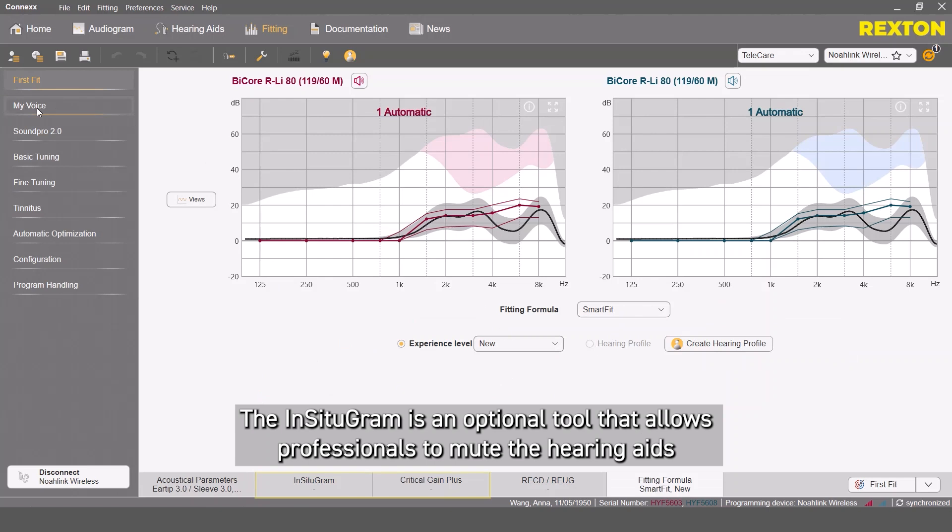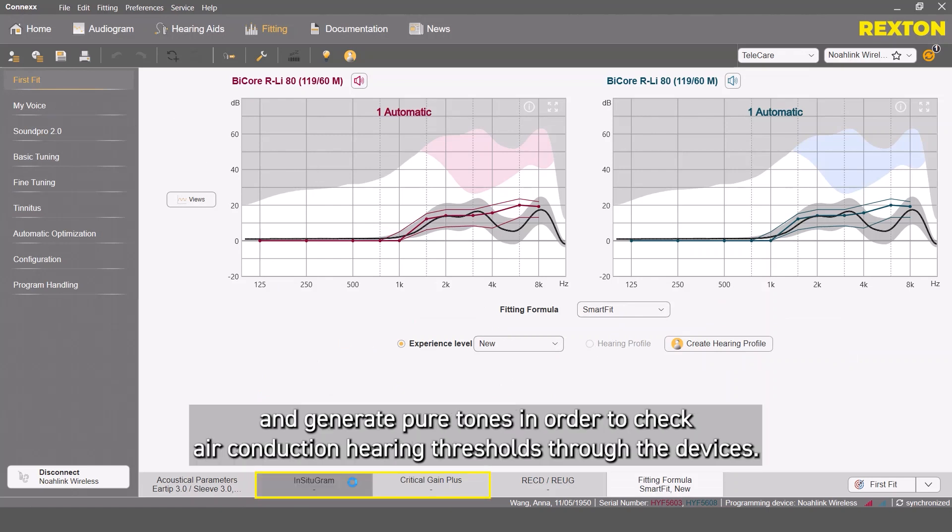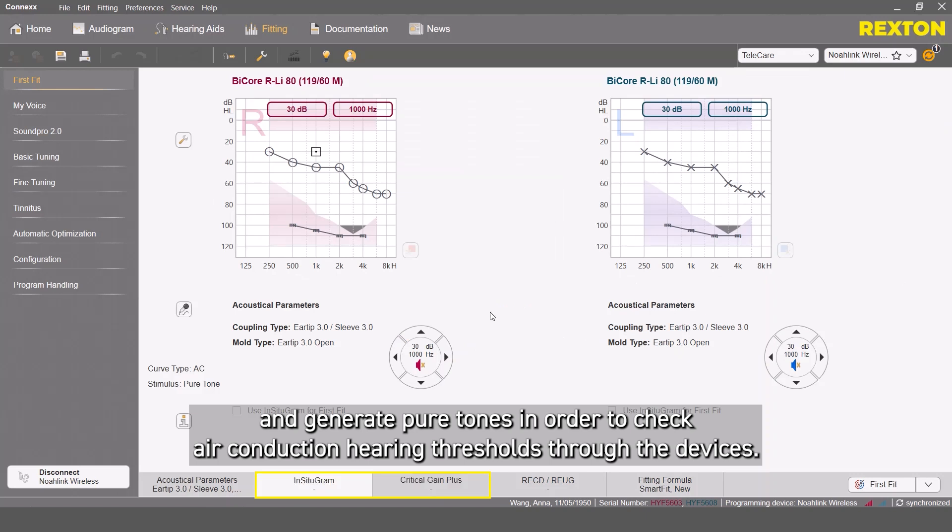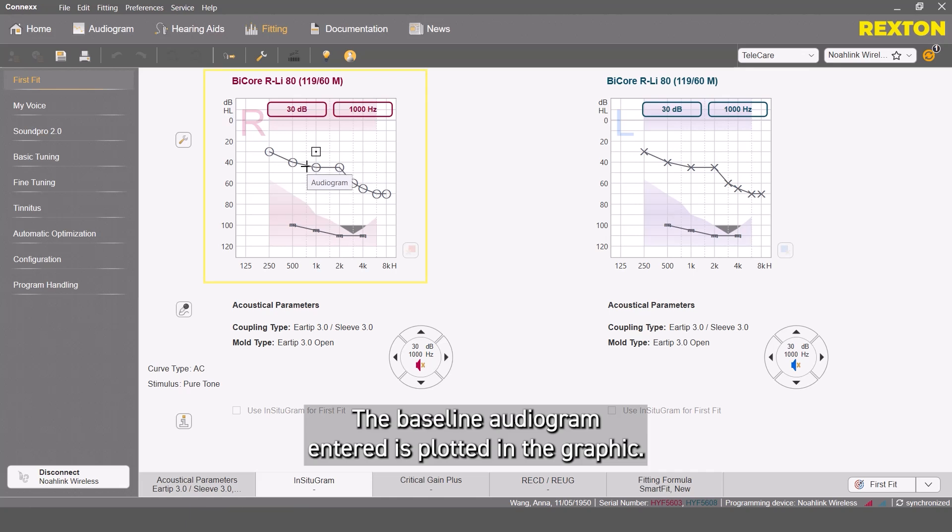The Incitogram is an optional tool that allows professionals to mute the hearing aids and generate pure tones in order to check air conduction hearing thresholds through the devices. The baseline audiogram entered is plotted in the graphic.